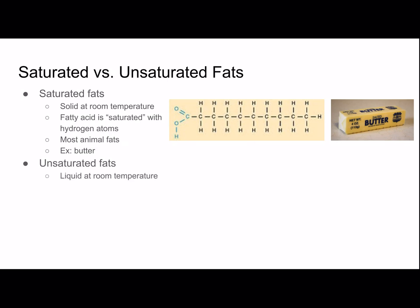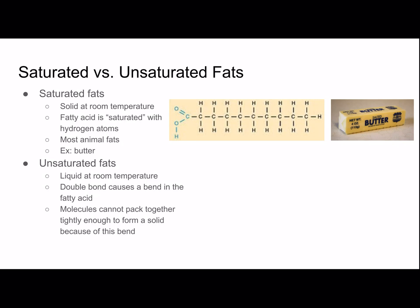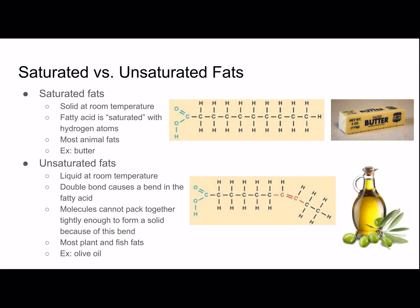Unsaturated fats are liquid at room temperature, and this is all because of a double bond. The double bond causes a bend in the fatty acid, which leads to the molecules not being able to pack together tightly enough to form a solid. Most plant and fish fats are unsaturated, which is why we call them oils — an example is olive oil. You can see in the picture that the double bond between the two carbon atoms leads to a bend, stopping fatty acid tails from coming close enough to form a solid. To be an unsaturated fat, there has to be at least one double bond between two carbons.